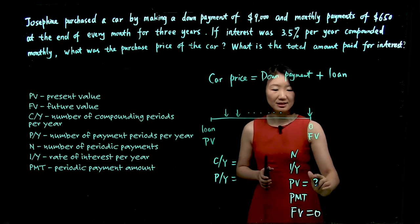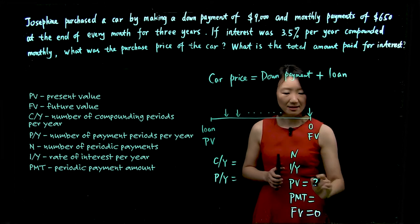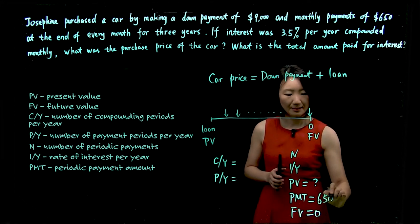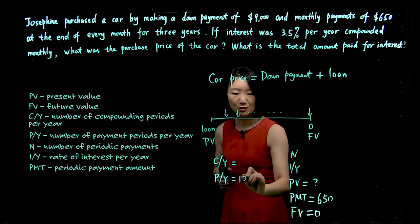And the PMT in this case, is $650 every month. Because it's monthly payment, we know payments per year is 12.